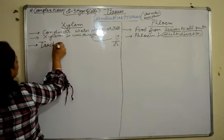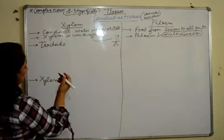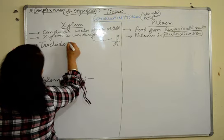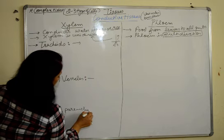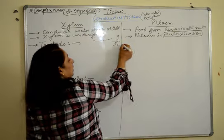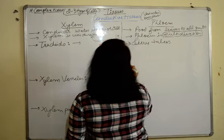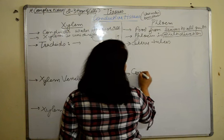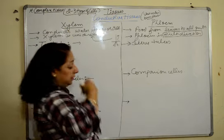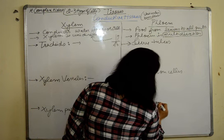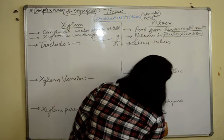Xylem has tracheids, xylem vessels, and xylem parenchyma. In some books, xylem fibers are also mentioned. For phloem, it is made up of sieve tubes, companion cells, phloem parenchyma, and phloem fibers.